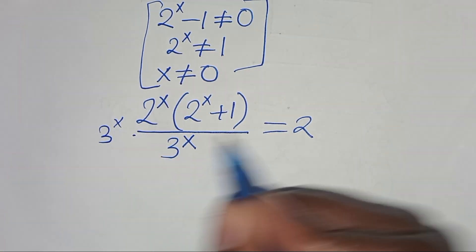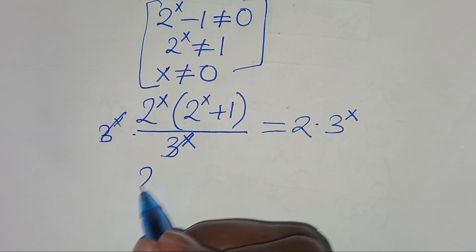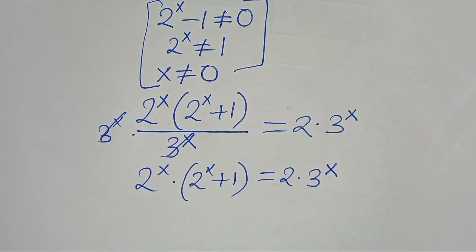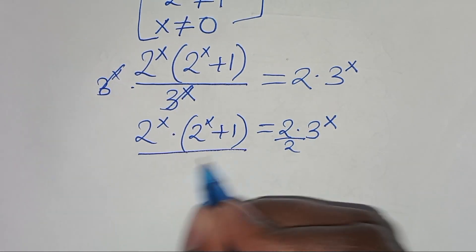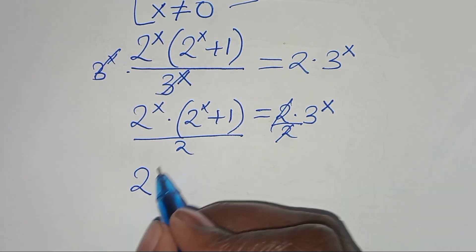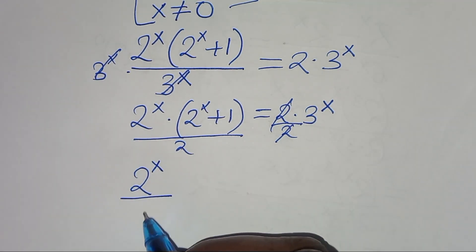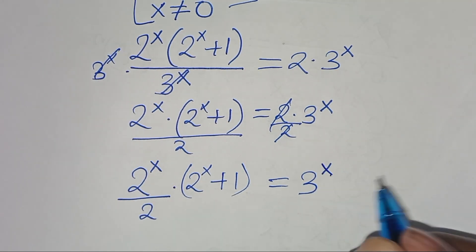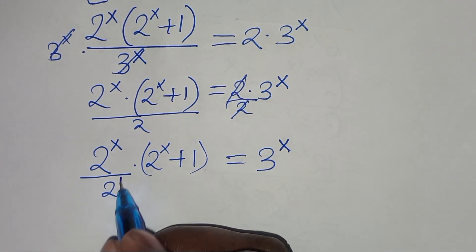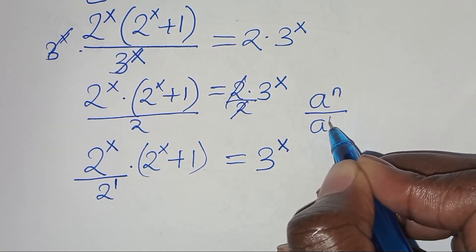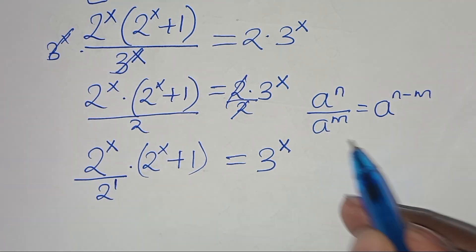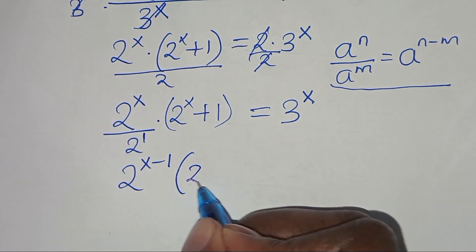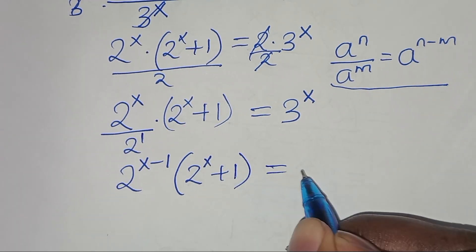Let's multiply both sides by 3^x, so that 2^x times (2^x plus 1) equals 2 times 3^x. Now divide both sides by 2, giving (2^x divided by 2) times (2^x plus 1) equals 3^x. Using the quotient exponent rule, 2^x divided by 2 equals 2^(x minus 1). So we arrive at 2^(x-1) times (2^x plus 1) equals 3^x.